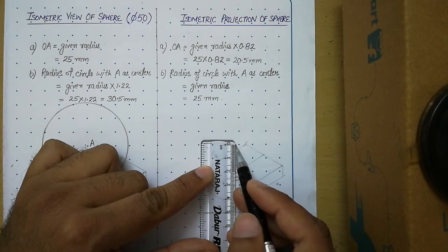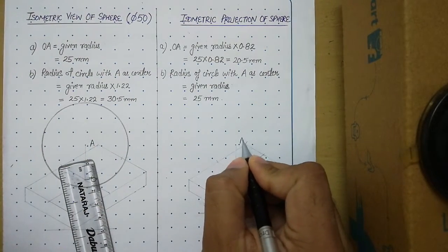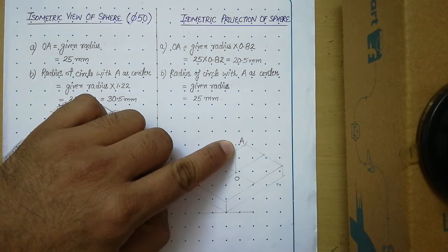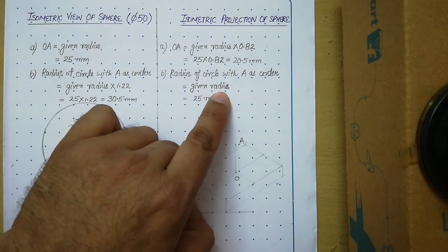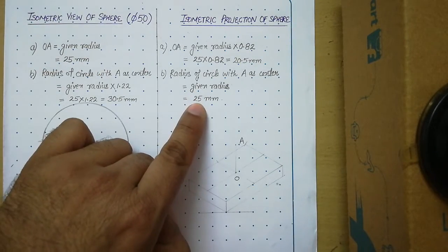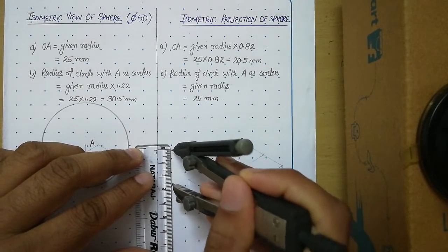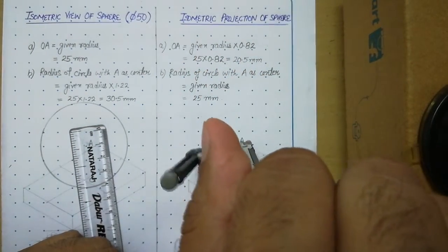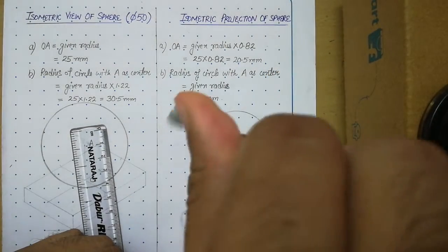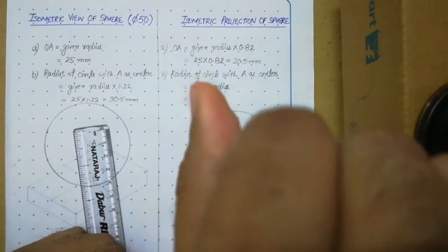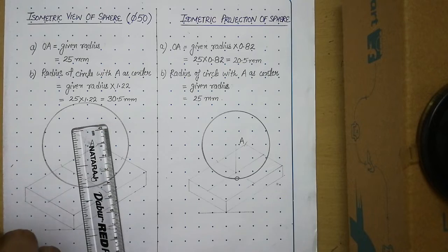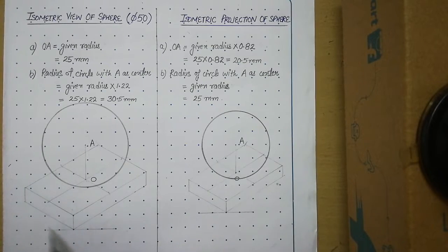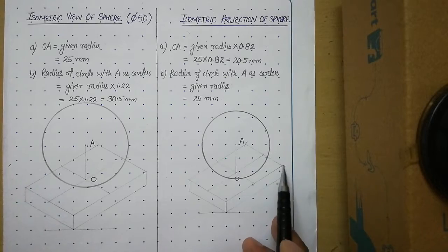Draw that thin vertical line of 20.5 mm and call that point A. With A as center, draw a circle. In this case, the radius of that circle equals the given radius — diameter was 50, so given radius is 25. Open the compass to 25 mm and with A as center draw the circle. This is the isometric projection of the sphere. Make the lower portion of the solid thick — the visible edges of the bottom solid should be made thick.